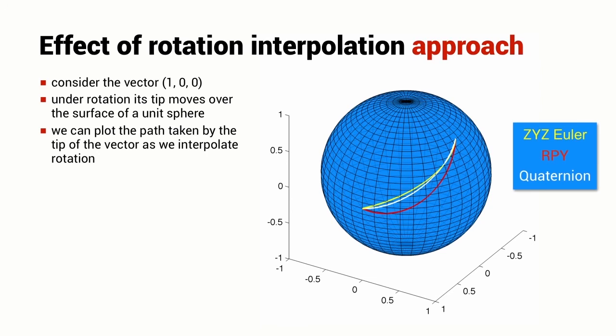I can interpolate the initial and final Euler angles, the initial and final roll-pitch yaw angles or the initial and final quaternions and they are shown by the different colored paths plotted here on the sphere. The quaternion path shown in white is the shortest and most direct path. We can see that the roll-pitch yaw interpolation path has deviated significantly from it. It has taken a more indirect and longer path to get from the initial orientation to the final orientation. Quaternion interpolation is the gold standard.